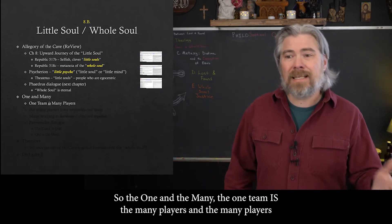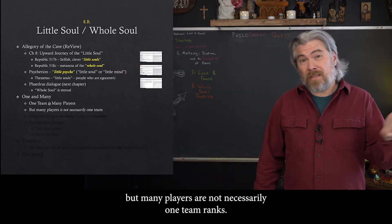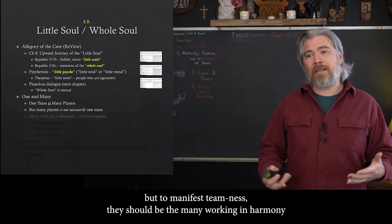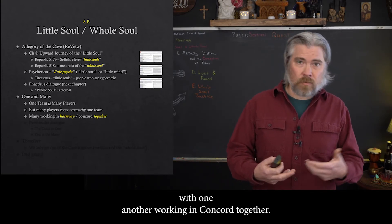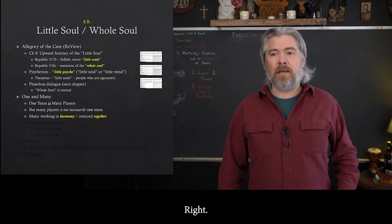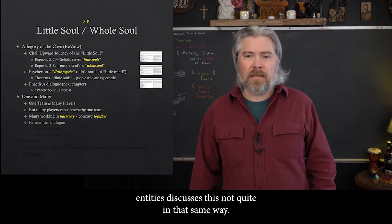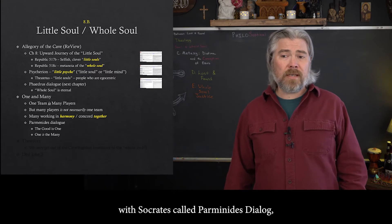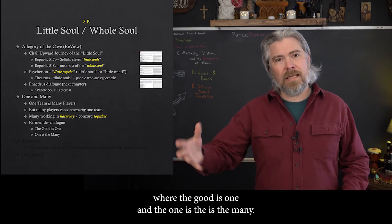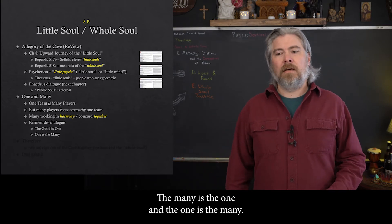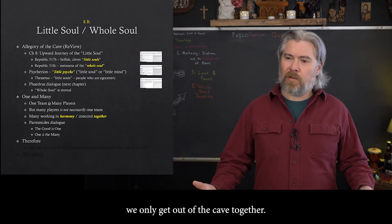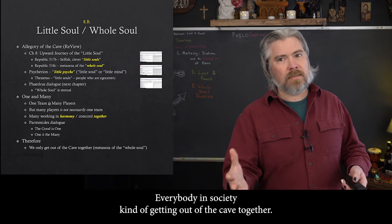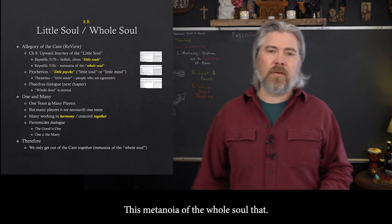But then something changed. All of a sudden just something changed and all of the players started working as a team — reading each other's body language, passing to each other, anticipating passes, really working as one team. Nine different bodies, nine different little souls, but working as one team. The team isn't anything other than just the players — it's not like you add some 'teamness' on top. What makes these many players into one team is how they function together. The one team becomes manifest through the way that the many players interact with one another. So we only get out of the cave together — it requires this turning together as a team, everybody in society getting out of the cave together: this metanoia of the whole soul.